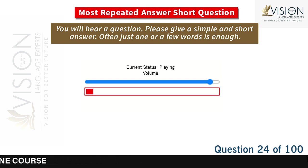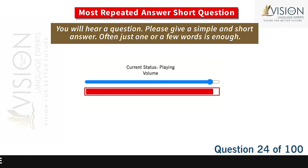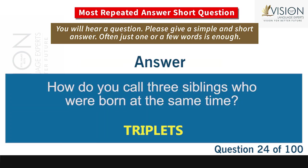How do you call three siblings who were born at the same time? Triplets.